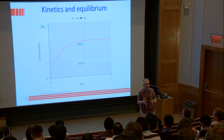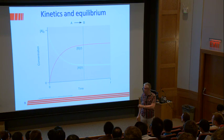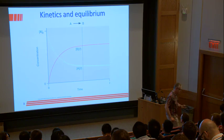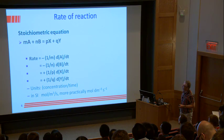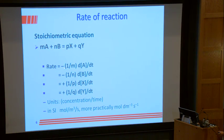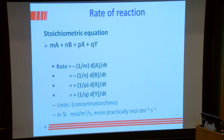Bear in mind that when discussing the next slides, I'm talking about the very early stages of reaction when concentrations of products are so small the reverse rate isn't contributing. At equilibrium, the forward and reverse rates are equal and concentrations no longer change. In general, for mA + nB → pX + qY, the rate is: −(1/m)d[A]/dt = −(1/n)d[B]/dt = +(1/p)d[X]/dt = +(1/q)d[Y]/dt.